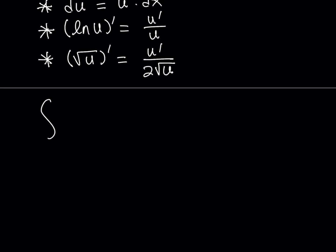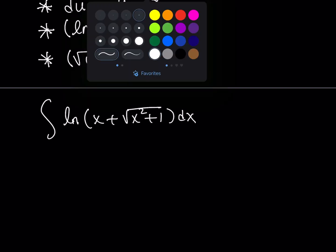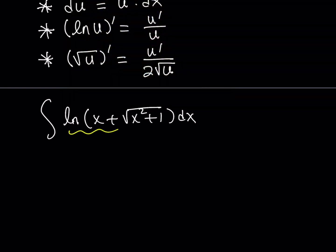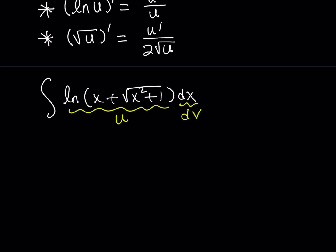So we're trying to integrate ln of x plus the square root of x squared plus 1, dx. We're going to name these u and dv. I don't really have a choice here, because there's only one function that's multiplied by dx, and dx has to be dv. So u is equal to ln of x plus the square root of x squared plus 1.